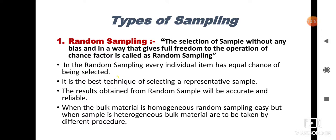In random sampling, each particle has an equal chance to be selected. This type of sampling requires minimum knowledge of the bulk material. It is one of the best techniques for selecting a representative sample. The results obtained from random sampling will be accurate and reliable.